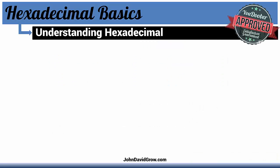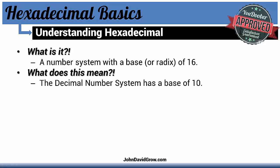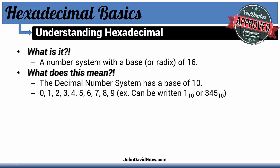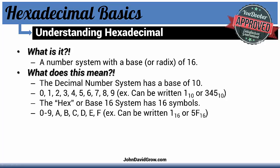Before we get into the conversion process, I just want to go over some of the basics. What is hexadecimal? It's a number system with a base of 16. The decimal number system, the one that we're used to, has a base of 10, meaning it has 10 numbers: 0 through 9. The hex number system has 16 — 0 through 9 and A through F.